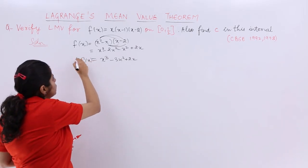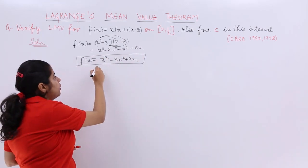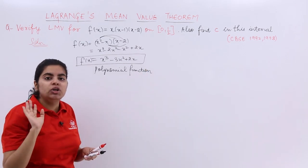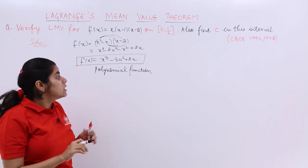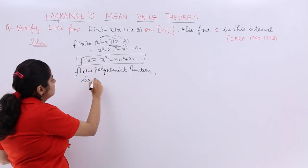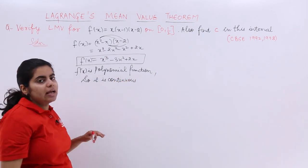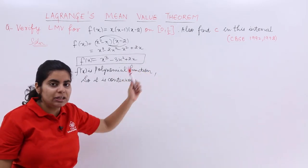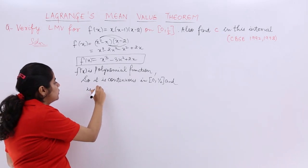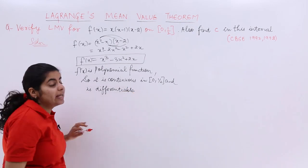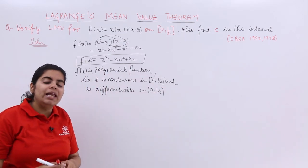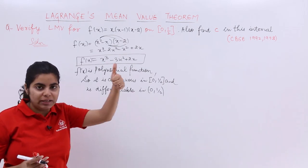This is our f(x) under consideration. It is a polynomial function, and about polynomial functions we know two key things: a polynomial function is differentiable everywhere and continuous everywhere. Since f(x) is a polynomial function, it is continuous everywhere — and in particular, continuous on the closed interval [0, 1/2]. It is also differentiable in the open interval (0, 1/2).